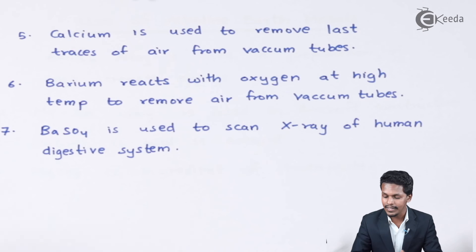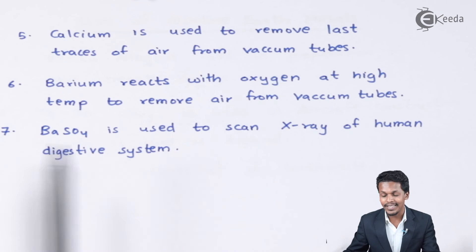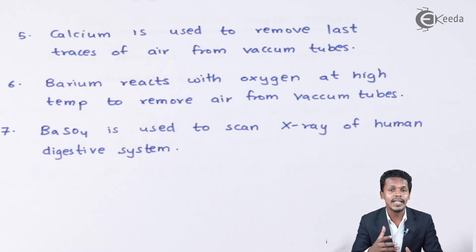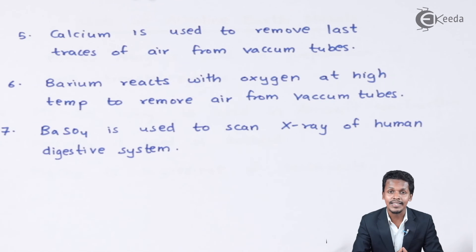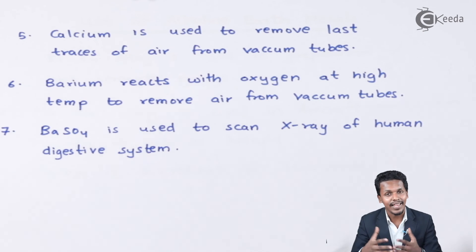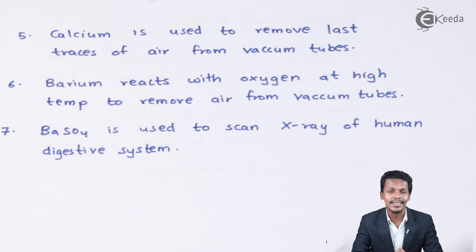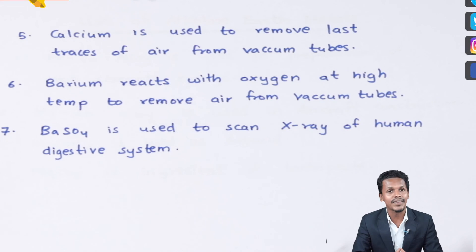The last point is that barium sulfate is used to scan X-rays of the human digestive system. Barium sulfate is insoluble in water, which is why it is used as a 'barium meal'. Since it is very insoluble in water, it is used in X-ray imaging to detect problems in the digestive system.